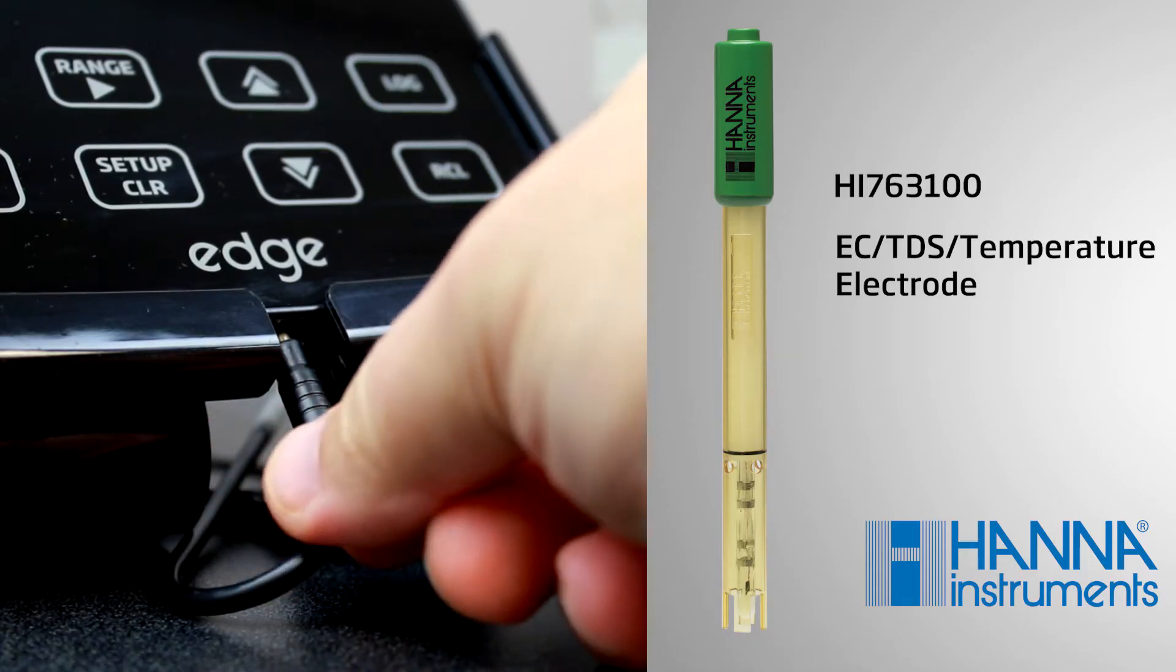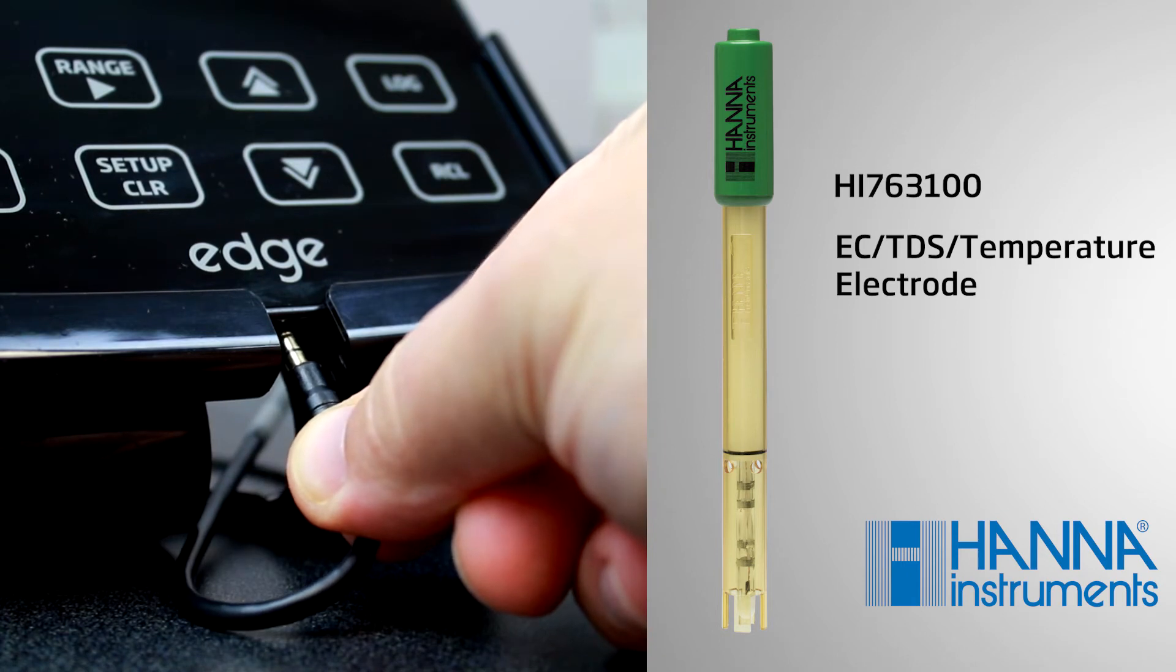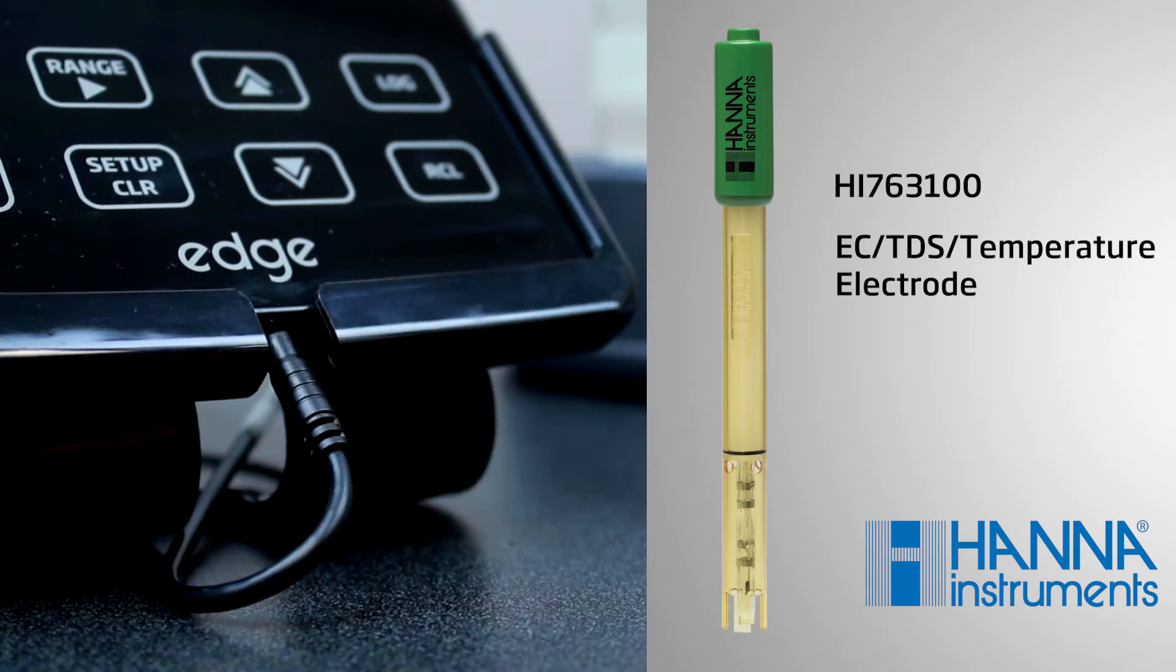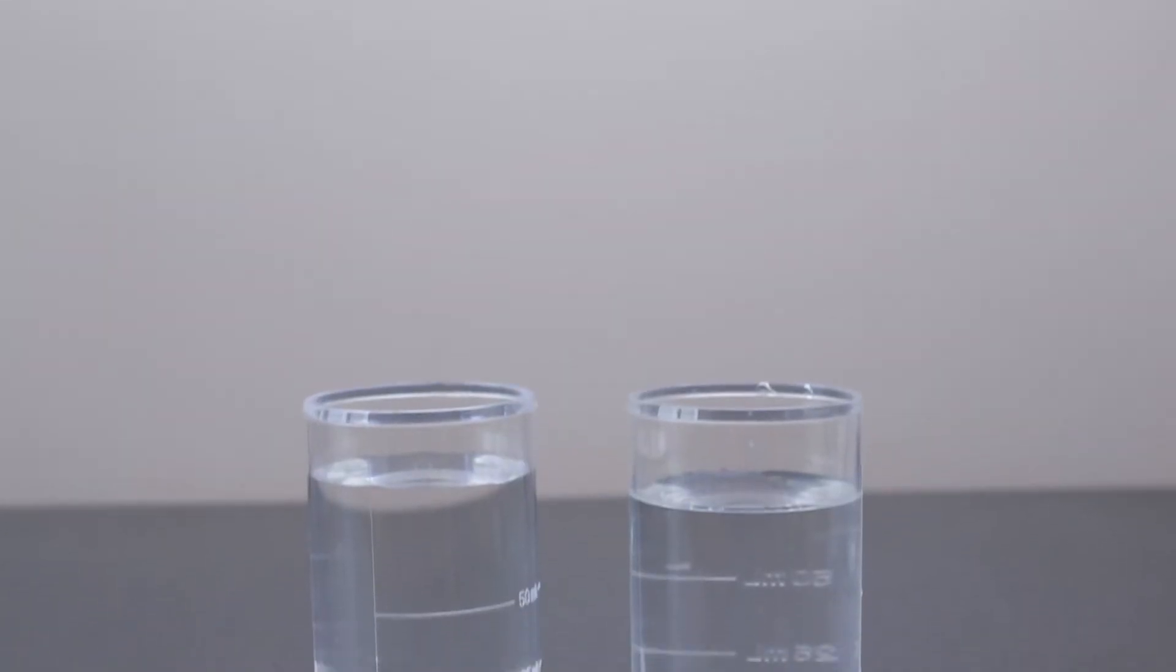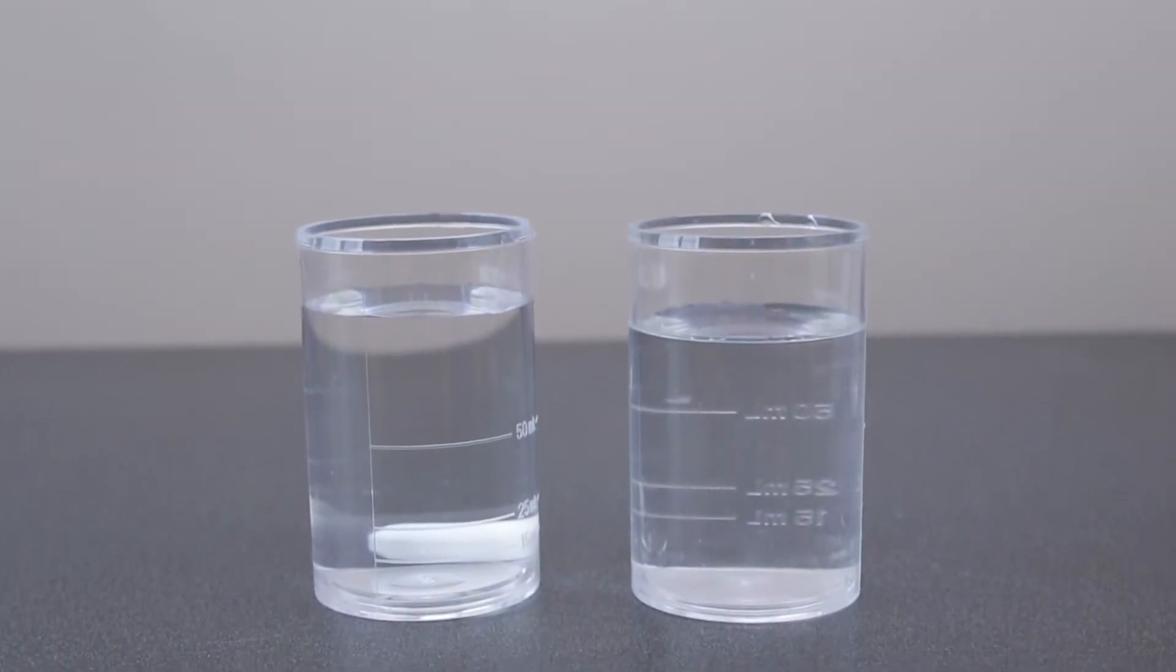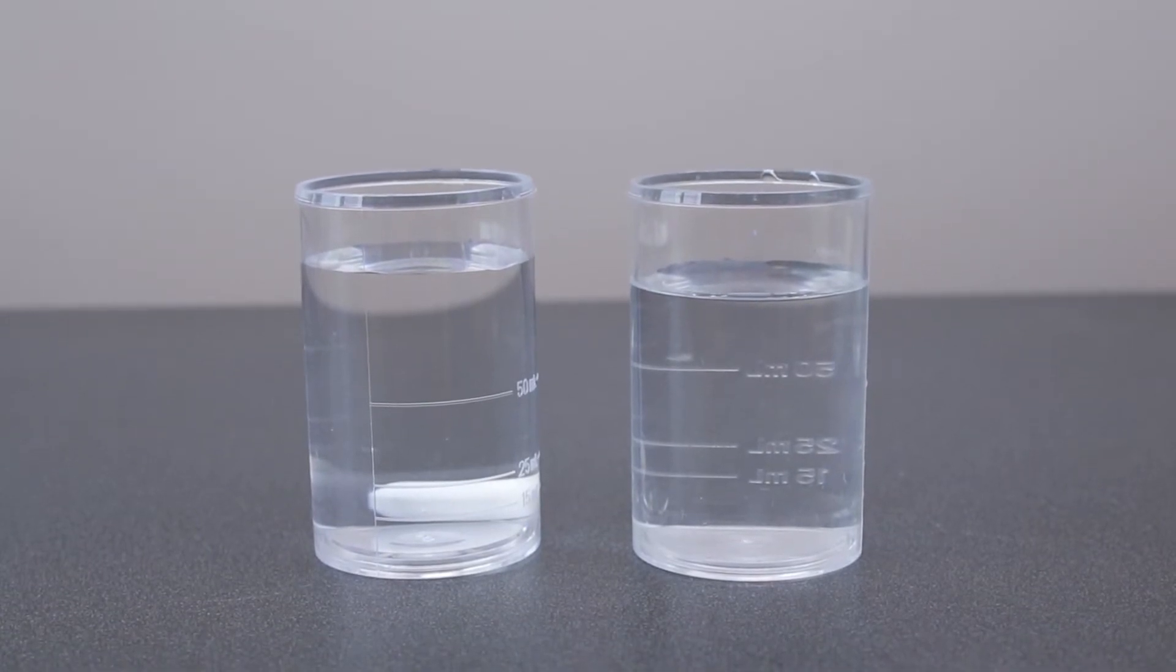For EC-TDS calibration, plug the HANA HI763100 EC temperature electrode into the meter. For accurate calibration and to minimize cross-contamination, use two beakers for the calibration standard—one for rinsing the probe and one for calibration. Use plastic beakers to minimize any EMC interferences.